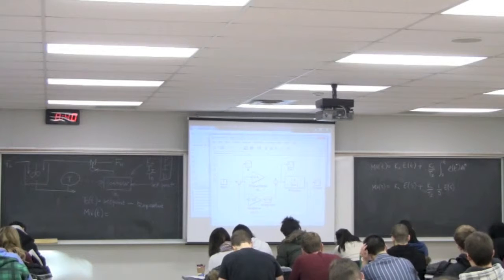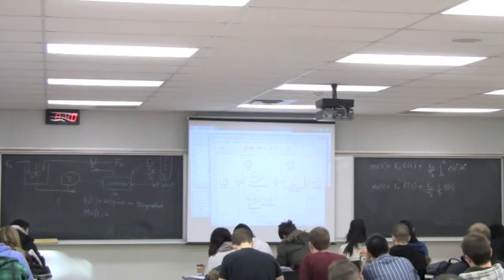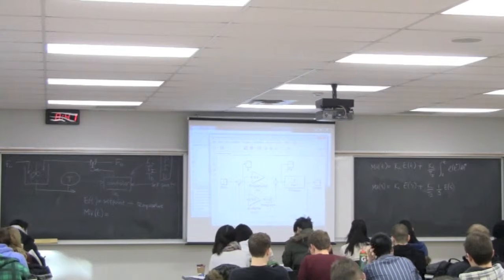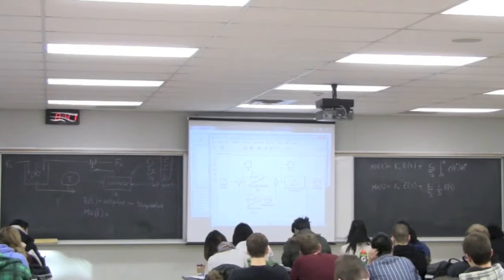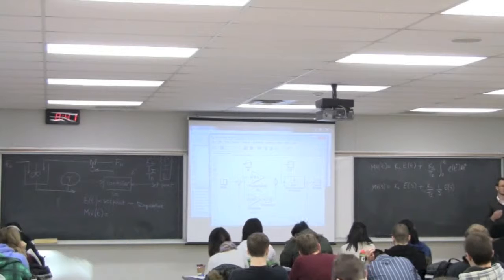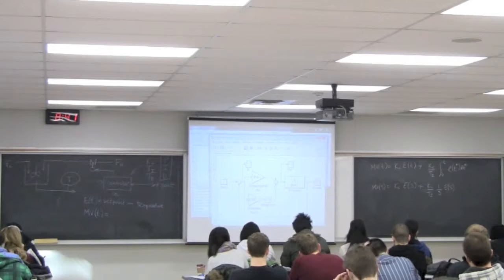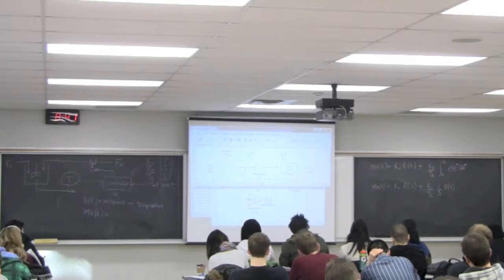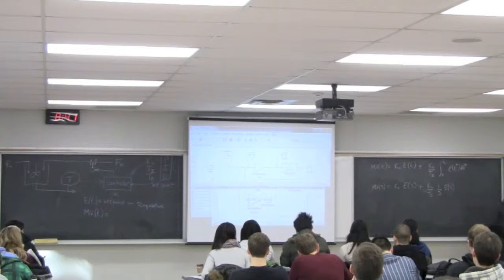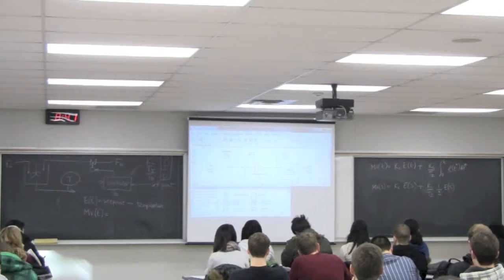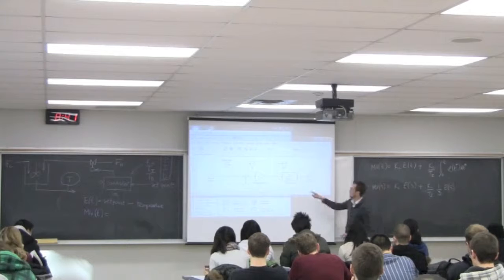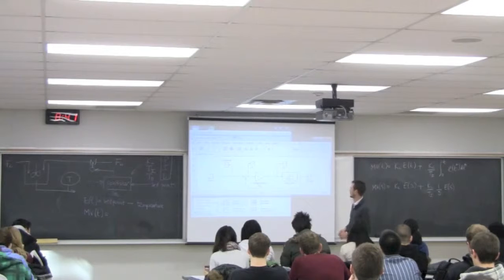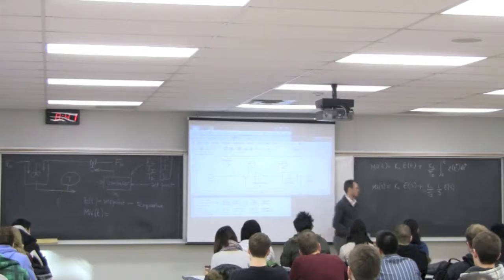Now I want to point out something that should be of interest to understand why we look at derivative mode. We can see it as an anticipation of what's going to happen in the future. Let me go back to the diagram we considered originally. Here on the projector I have a simulation of a process — a first-order process with a larger time constant — and I'm considering just a proportional controller with a simple step change.